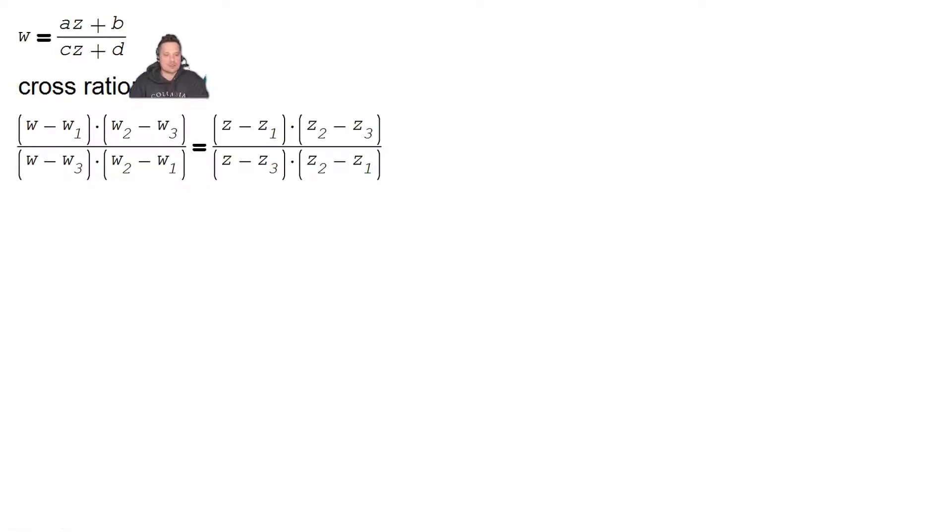Welcome, in this one I'm going to show you how to find, using the cross-ratio, a Mobius transformation. So remember the general form is W equals AZ plus B over CZ plus D, and the goal is to find A, B, C, and D, and Z represents the input.